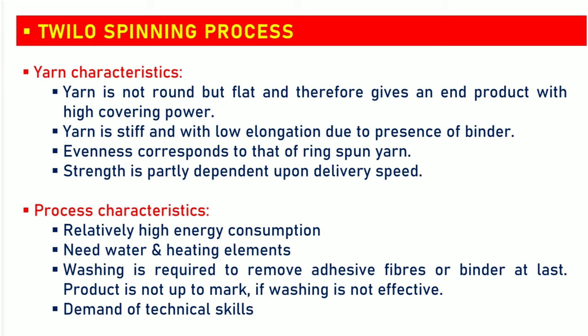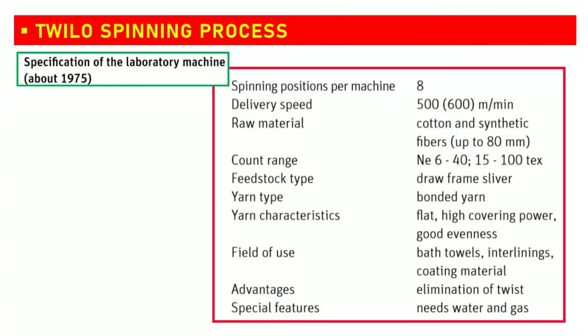Process characteristics: relatively high energy consumption. Water and heating elements are needed. Washing is required to remove adhesive fibers or binder at the last stage. Product quality is not up to mark if washing is not effective. Technical know-how and skills are demanded. This table gives technical specifications of a laboratory machine — spinning positions per machine is 8, and delivery speed is 500 to 600 meters per minute. Elimination of twist is the advantage, but it needs water and gas.